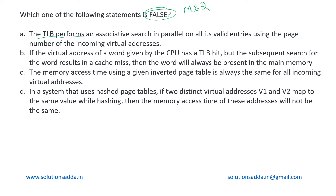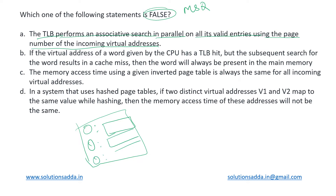The first option says that the TLB performs an associative search in parallel on all its valid entries using the page number of the incoming virtual address. TLB is a set associative and fast memory which stores data in the form of a key and its corresponding value. If we find an entry in TLB, it is readily available and we do not need to search in main memory. This TLB is like a fully associative memory, so the search goes on in parallel and not in series — using content rather than address for the search. The parallel search is possible because of its set associative property, searching in parallel on all valid entries using the page number of the incoming virtual address.